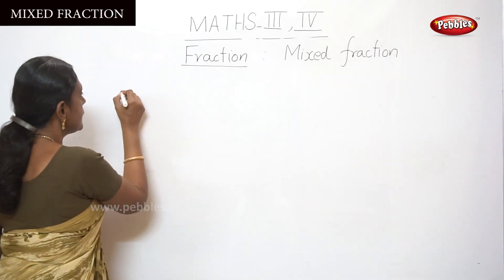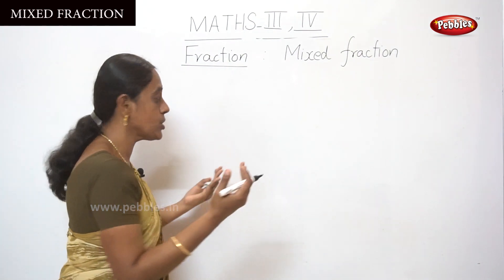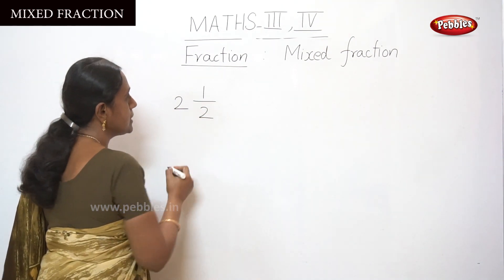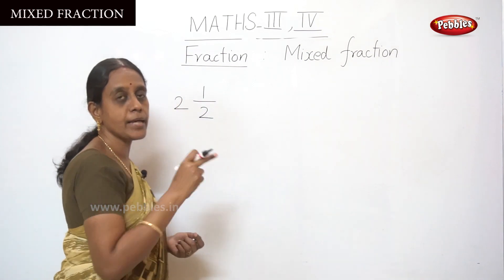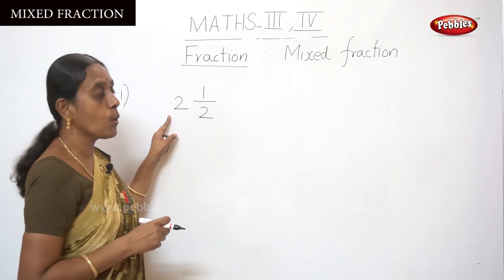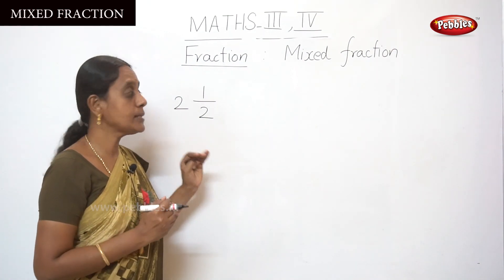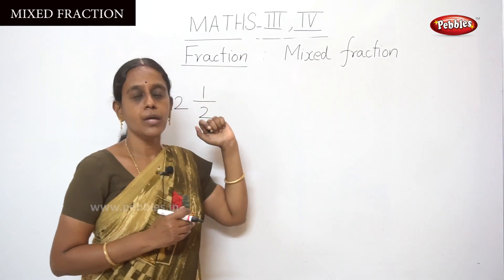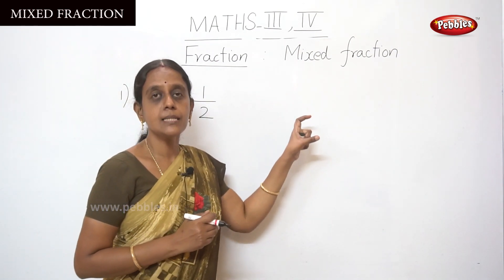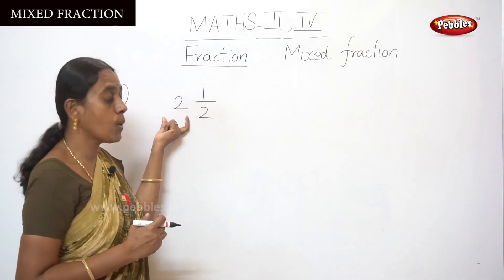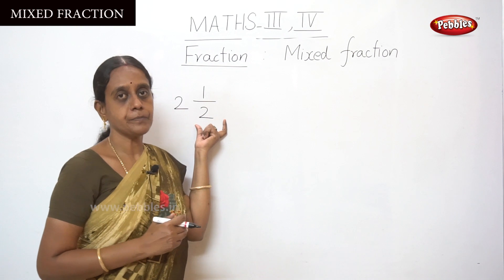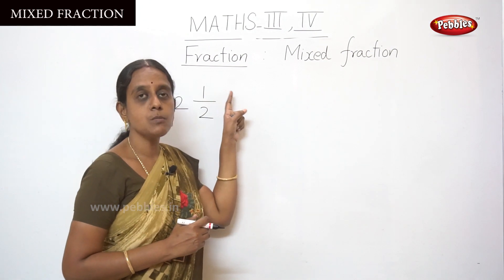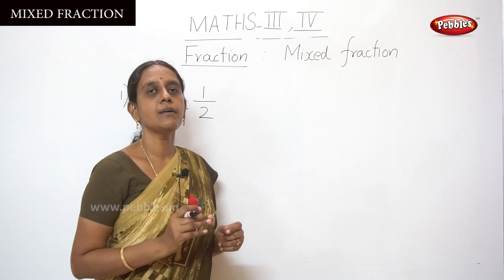I am going to explain with an example what is meant by mixed fraction. It is a combination of one whole number and a proper fraction. That is how to read this: 2 and 1 by 2. Here, 2 is the whole number, and 1 by 2 is a portion — that is called mixed fraction. Mixed fraction means a combination of one whole number and a proper fraction. In a proper fraction, the numerator is smaller than the denominator.